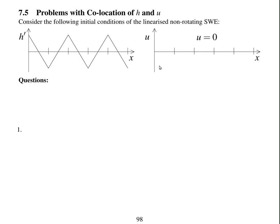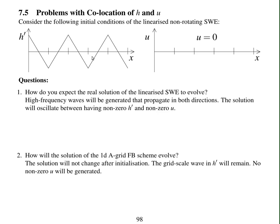The solution is never going to change. If you initialize that laser, it'll stay like that forever. So the grid scale wave in h prime will remain. No non-zero u will be generated. So this is the same answer as what we got from the dispersion relation. The grid scale waves don't propagate. They don't move at all. This does not seem ideal. And in the next lecture, we're going to look at a solution to this problem.